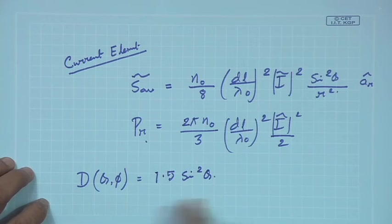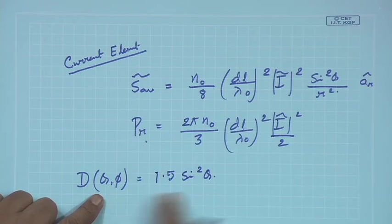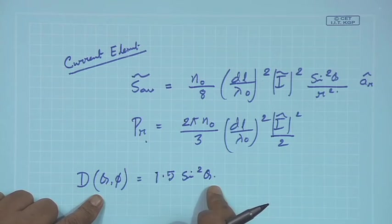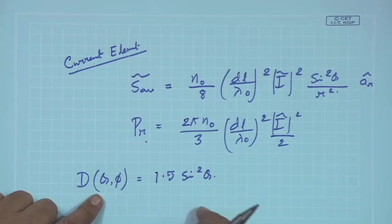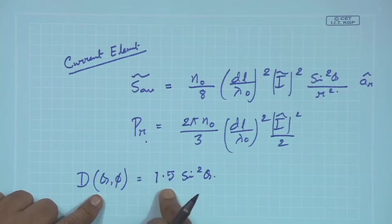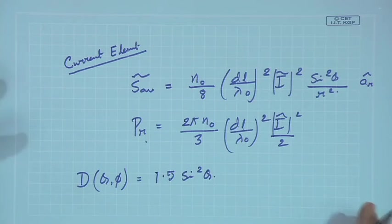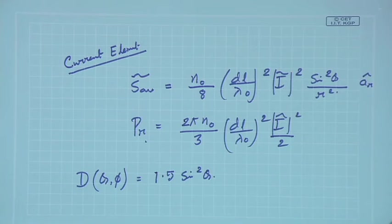So at any given angle, for example θ = 30°, sinθ = 1/2, sin²θ = 1/4 = 0.25. So directivity at that angle is 1.5 × 0.25. The maximum value is obtained when sinθ = 1, that is, the maximum directivity is 1.5.